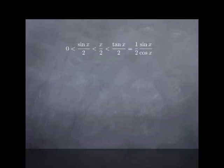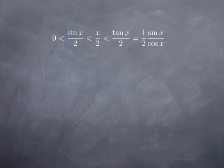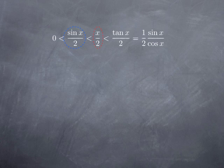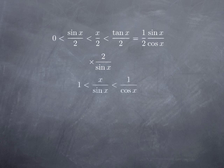So we have obtained that sin x over 2 — the area of the blue triangle — is less than x over 2 — the area of the red angular sector — which is less than tan x over 2 — the area of the larger green triangle. If we multiply every term by 2 over sin x, we multiply by a positive number because x is a positive small angle, so sin x is positive. Therefore we preserve the direction of the inequalities and obtain that x over sin x is between 1 and 1 over cos x.